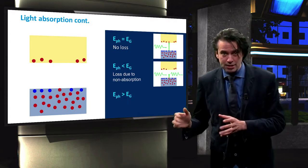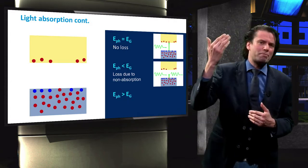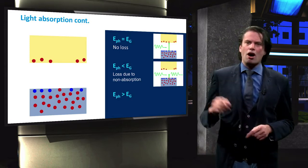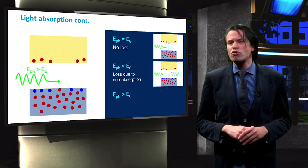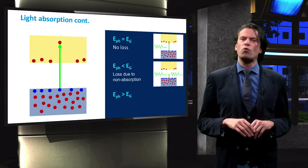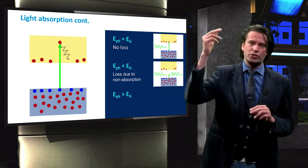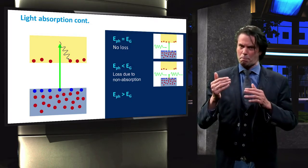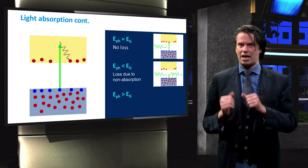If on the other hand, a photon has an energy greater than the band gap energy, some of its energy is lost as well. Upon absorption of a photon, the valence electron will be excited high into the conduction band. Shortly after excitation, however, the electron will relax back to the conduction band edge.